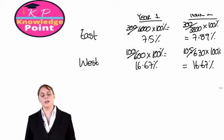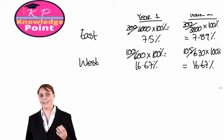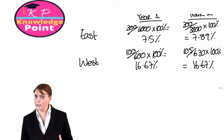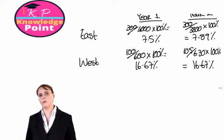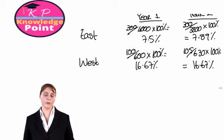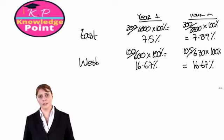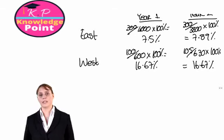The important thing to note here is look how different the capital employed figures are for each division. Clearly East division is much bigger. The capital employed for East division is significantly higher. But because return on capital employed is expressed as a percentage, we can use it to compare the performance of divisions of different sizes. So we can say here that the performance of West division is significantly better.